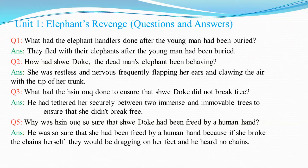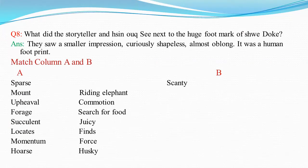Question number 5: Why was Hassanog so sure that Joy Dog had been freed by a human hand? The answer is he was so sure that she had been freed by a human hand because if she broke the chains herself, they would be dragging on her feet and he had no chains. Question number 6: What did the storyteller and Hassanog see next to the huge footmark of Joy Dog? The answer is they saw a smaller impression, curiously shapeless, almost oblong. It was a human footprint.